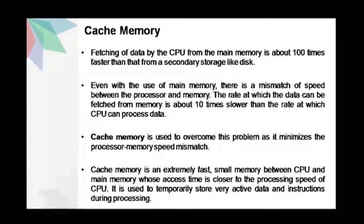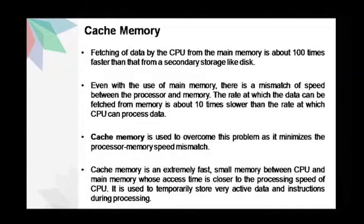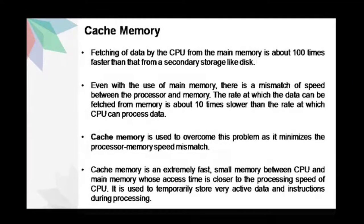Next is cache memory. Fetching of data by the CPU from the main memory is about 100 times faster than that of secondary storage. The main memory helps in minimizing the mismatch of processor-disk speed to a large extent, but even then there is a mismatch of speed between the processor and memory. The rate at which data can be fetched from memory is about 10 times slower than the rate at which the CPU can process data. Cache memory is used to overcome this problem as it minimizes the processor-memory speed mismatch.